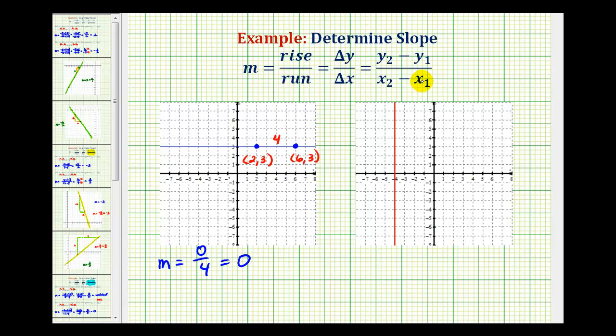Or if we wanted to use the slope formula here, given two points on the line, we could use the coordinates of these two points in this formula. So if we call these the 1's and these the 2's, this would be x sub 1, y sub 1, x sub 2, and y sub 2. Of course, we'll get the same slope, but the work is going to look different.